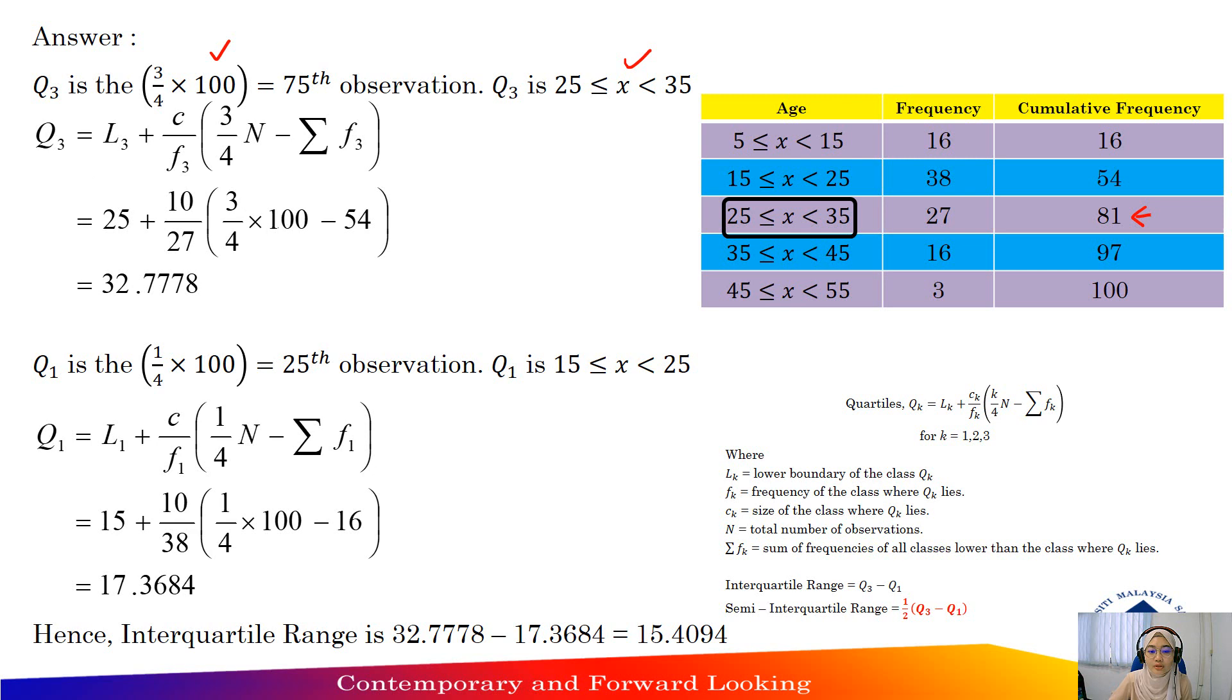So L3, the lower boundary, is 25. And then the class size is 10. And the frequency of the third quartile is 27. And three-quarters times 100...